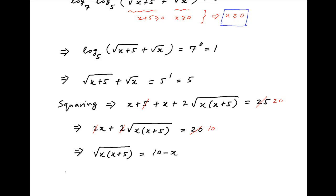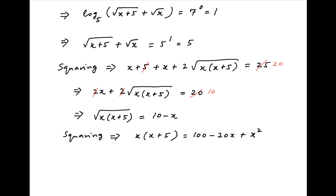Taking the square of both sides again, we get x times (x plus 5) is equal to (10 minus x) squared, which equals 100 minus 20x plus x squared. x squared cancels on both sides, and this equation becomes 5x plus 20x is equal to 100, or 25x is equal to 100.